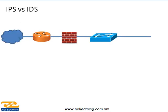Primero debemos saber la diferencia entre un IPS y un IDS. IPS significa Intrusion Prevention System o Sistema de Prevención de Intrusos. IDS significa lo mismo pero la D es Detection en lugar de Prevention. Uno los previene y otro los detecta; el IPS es más poderoso que el IDS. En un diagrama: tenemos Internet conectado a un ruteador, el ruteador a un firewall, y el firewall a nuestra LAN local.